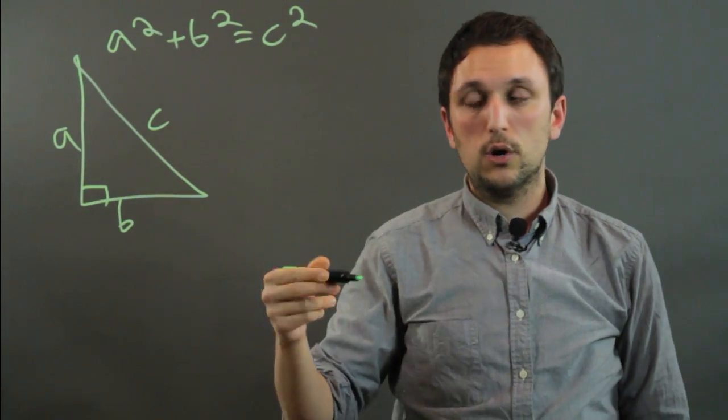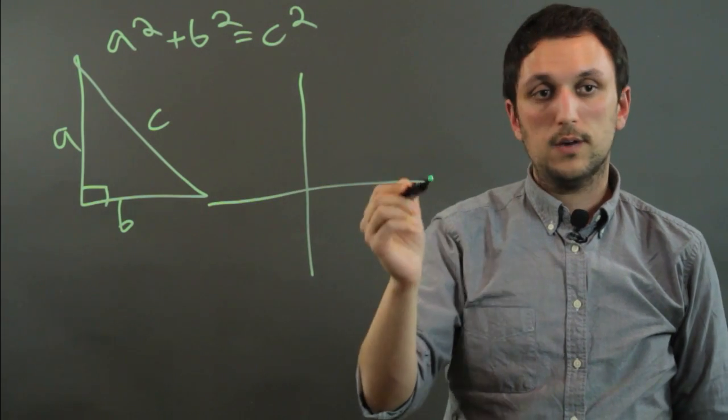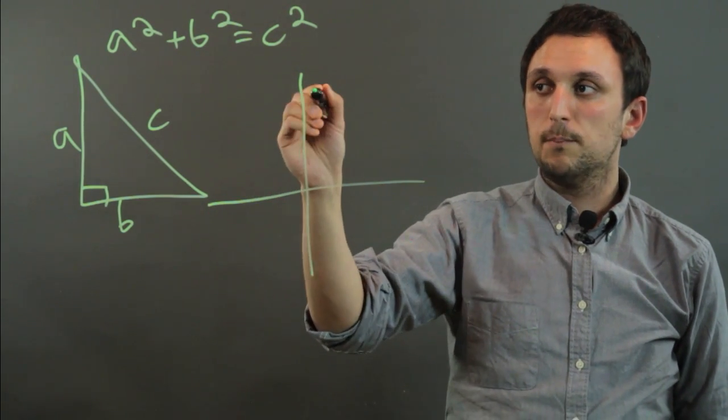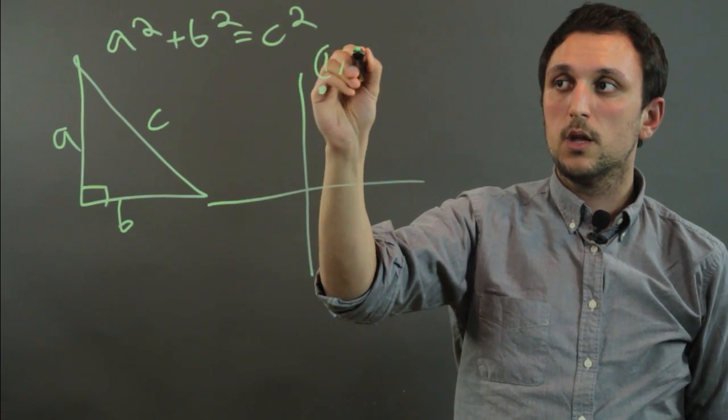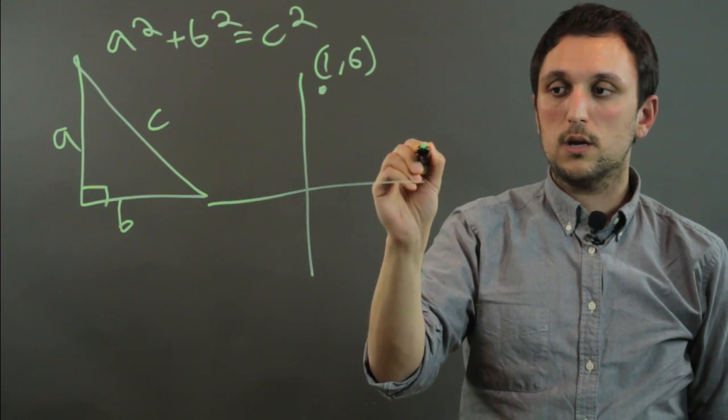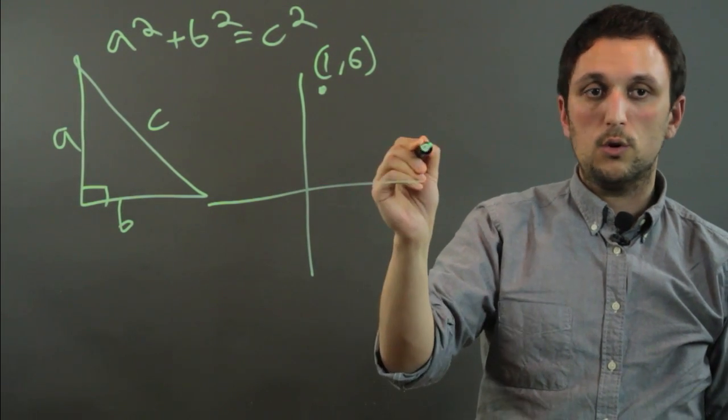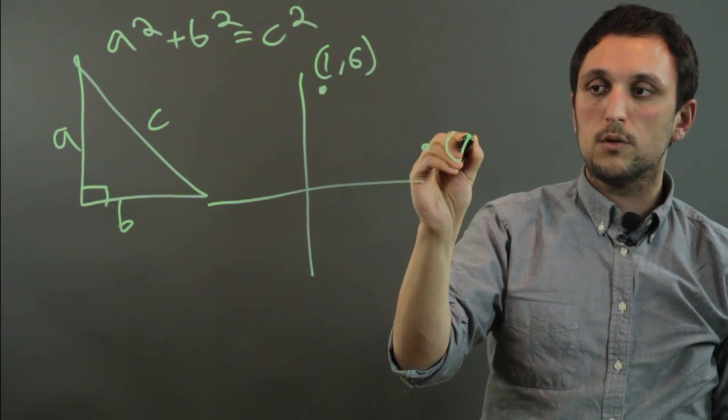But it's more useful in coordinate geometry to find out the distance between two things. So if we have this point up here, which is about 1 over and 6 up, and then we have this point over here, which looks like it's about 7 over and 2 up, so 7, 2.